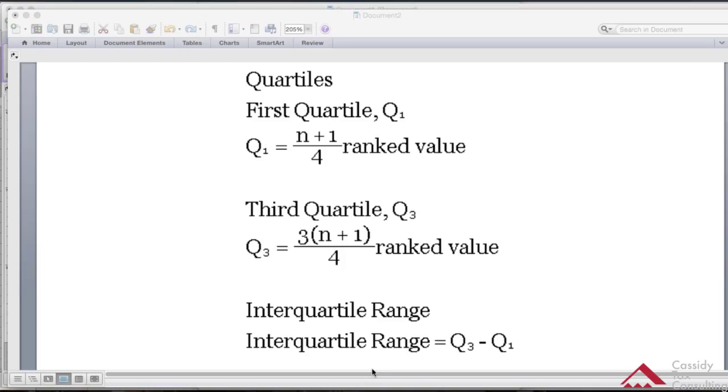Hey, welcome back. In this video we're going to cover quartiles. To calculate the first quartile: Q1 equals n (the data points) plus 1, divided by 4. Whatever that rank value is, you'll use the corresponding ranked value, which I'll show you.